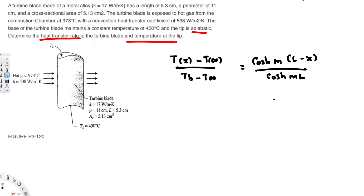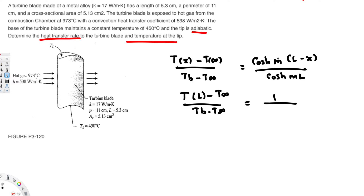To find the temperature at the tip, we set x equal to L. This gives us cos hyperbolic of (M times 0) in the numerator, which equals 1. So T_L minus T_infinity over T_B minus T_infinity equals 1 over cos hyperbolic of (M times L). The ambient temperature is 973 degrees Celsius from the combustion chamber, and the base temperature is 450 degrees Celsius. Length is also available at 5.3 centimeters.